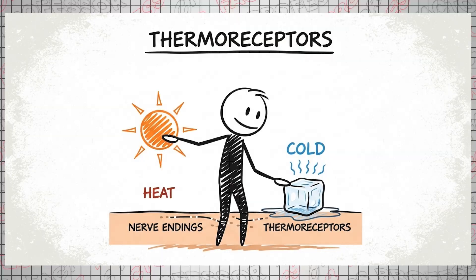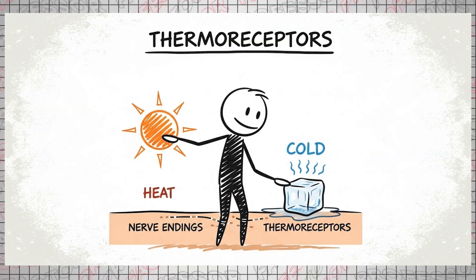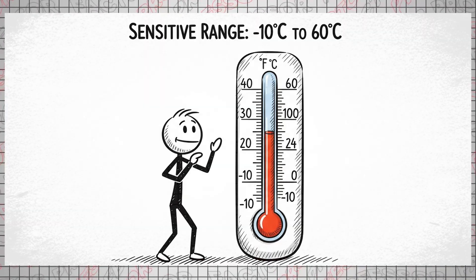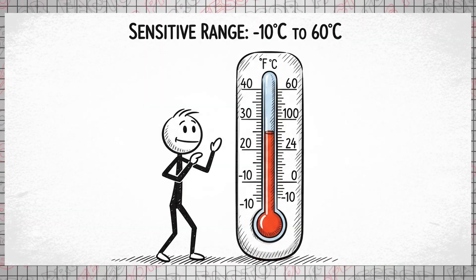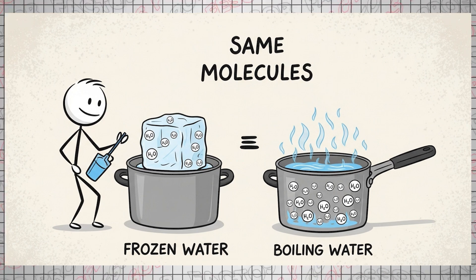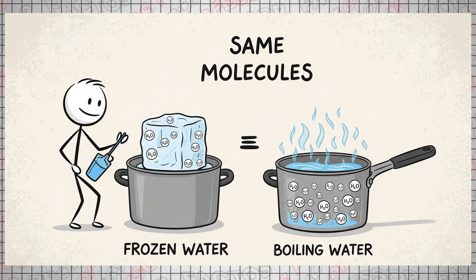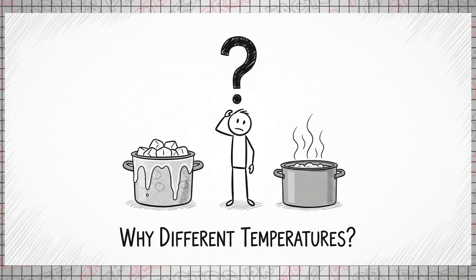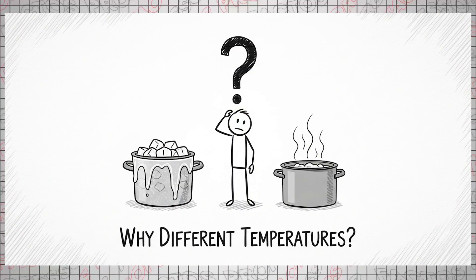Humans and many animals perceive heat through specialized nerve endings called thermoreceptors, which are sensitive enough to distinguish temperatures ranging from minus 10 degrees Celsius to 60 degrees Celsius. But consider this: a pot of water, whether frozen solid or vigorously boiling, contains the same number of water molecules, chemically remaining hydrogen oxide.